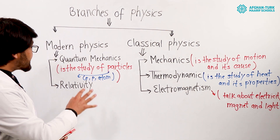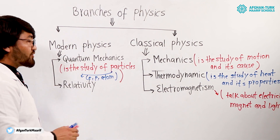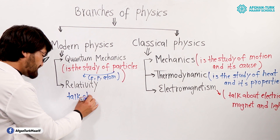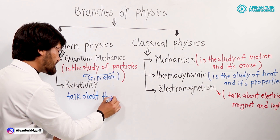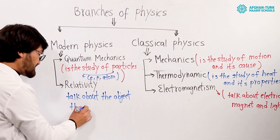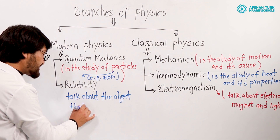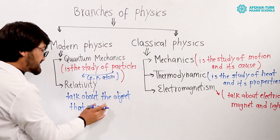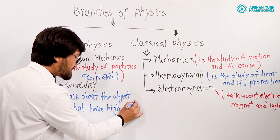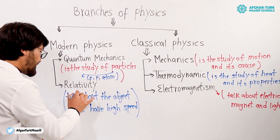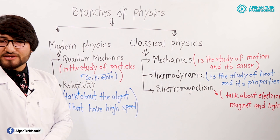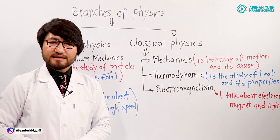Relativity is a part of modern physics that talks about objects or bodies that have high speed — like the speed of light or the speed of an electron.